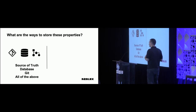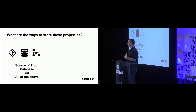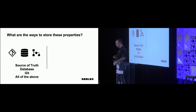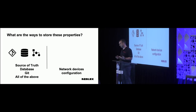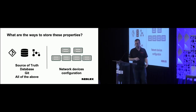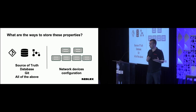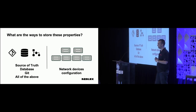How are we storing those properties? One approach — our approach — is to use a central source of truth, either database-based, Git-based, or all of the above. The other approach is that many people don't have a source of truth; they consider the network itself to be the source of truth. I personally don't think that's an approach that works very well with automation, but that's the state of our industry.